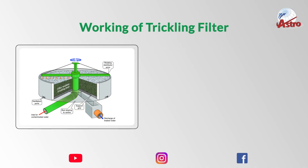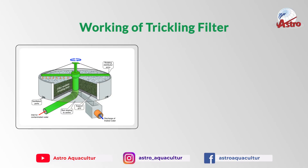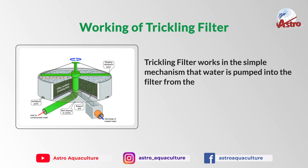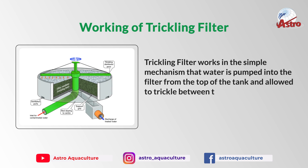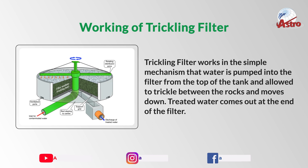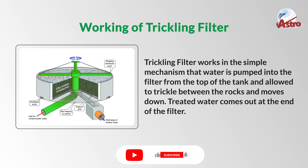The trickling filter works on a simple mechanism: water is pumped into the filter from the top of the tank and allowed to trickle between the rocks, moving downward. Treated water comes out at the end of the filter.